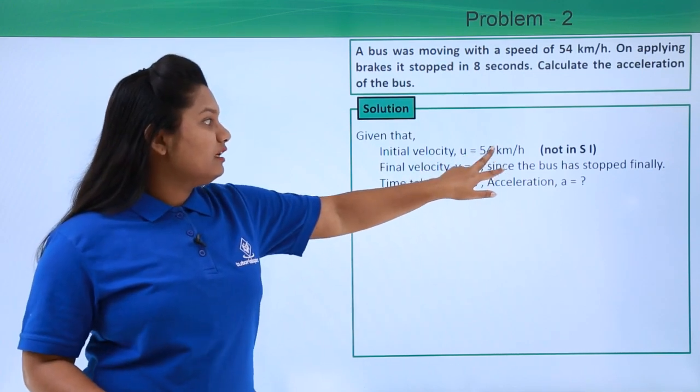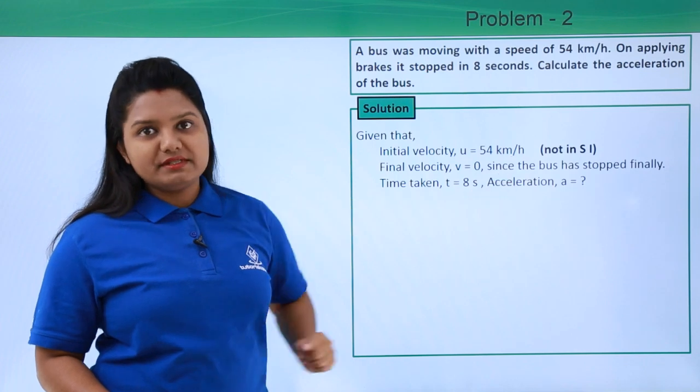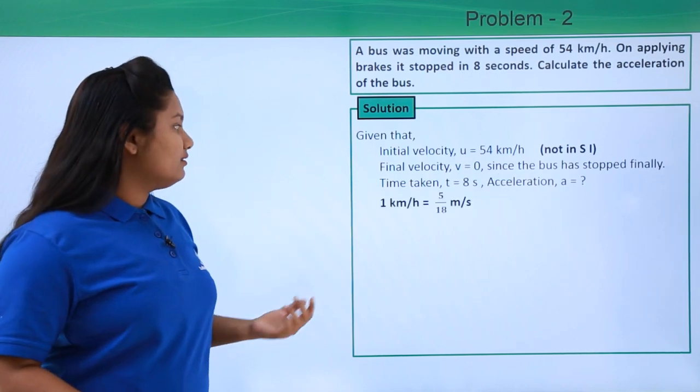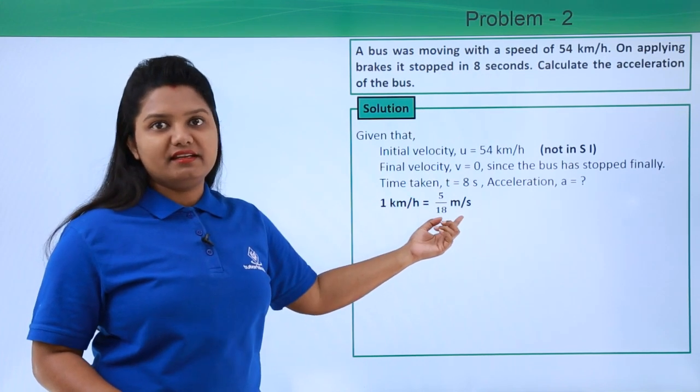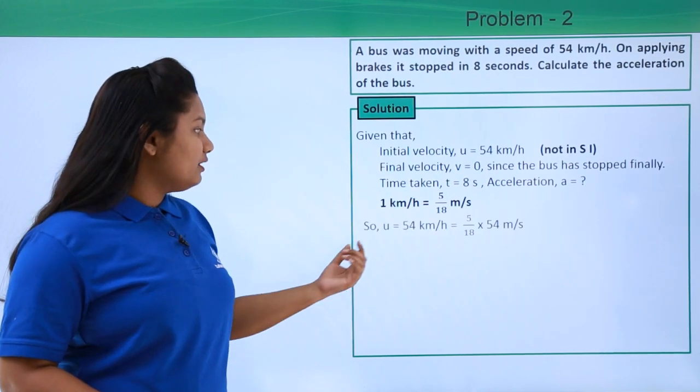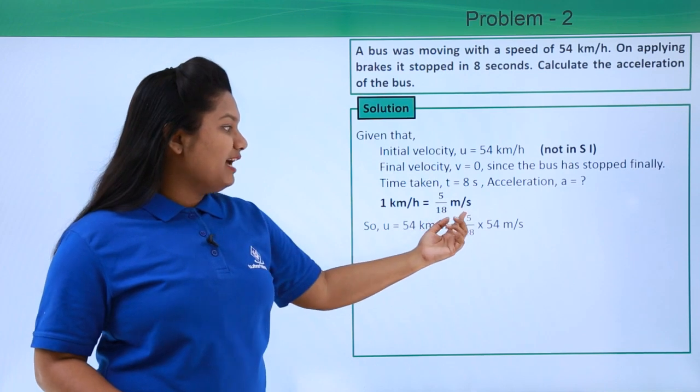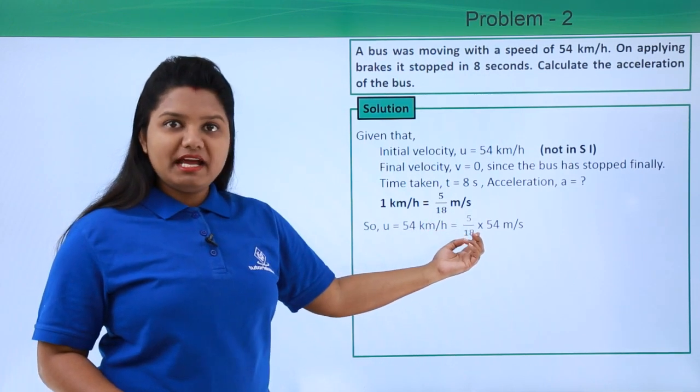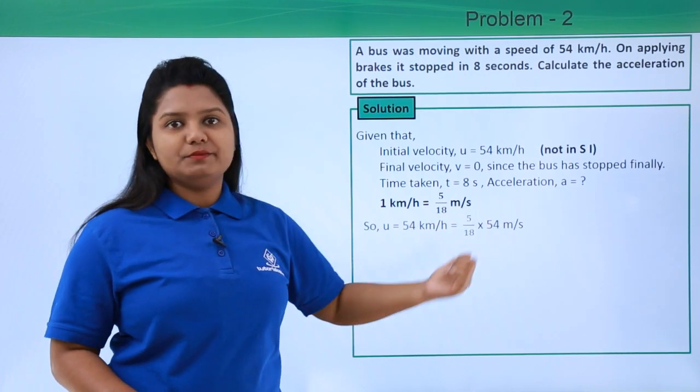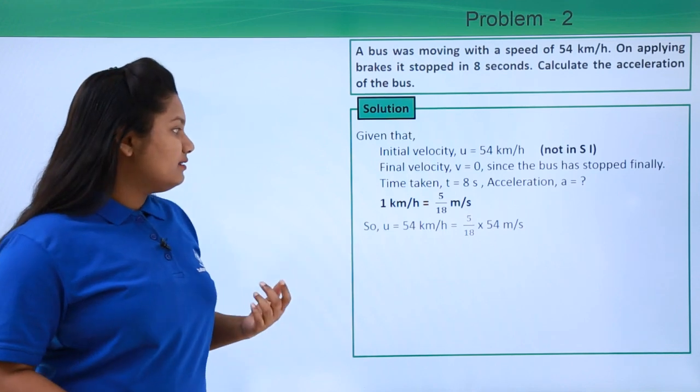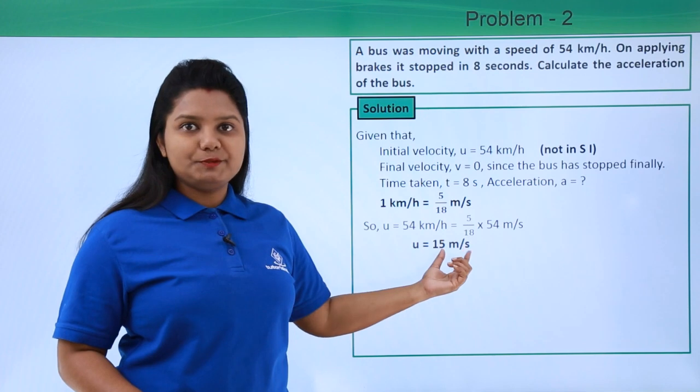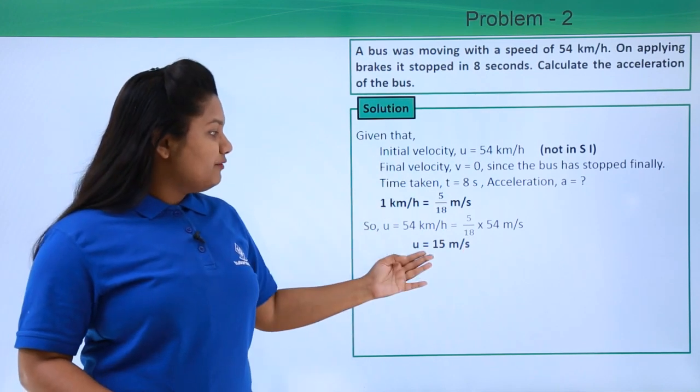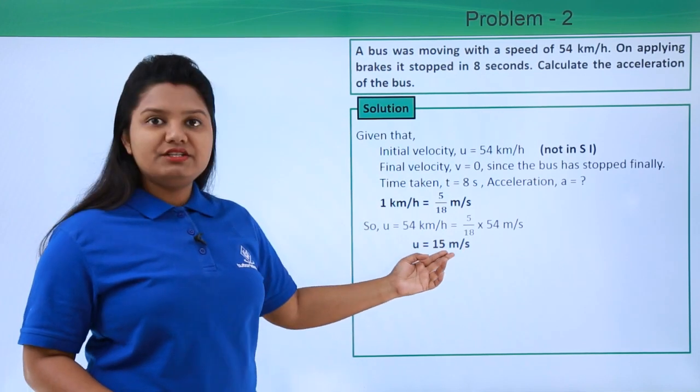We know that one kilometer per hour equals 5 by 18 meters per second. So 54 kilometers per hour will be equal to 5 by 18 multiplied by 54 meters per second. This gives us u equals 15 meters per second. So now we have got the initial velocity of the body in terms of SI units.